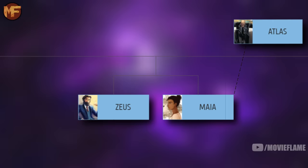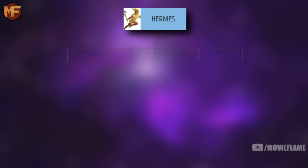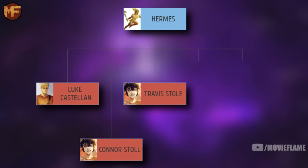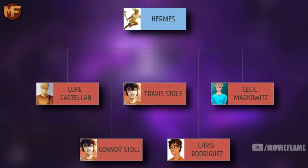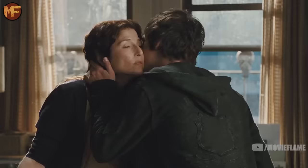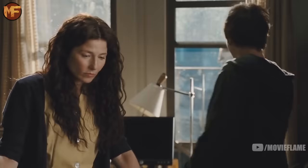Zeus's second affair was with Maia, who was actually the daughter of Atlas — whom we went over earlier. Zeus and Maia had their son Hermes, the messenger god. Hermes connects us to quite a few demigods, including Luke Castellan, my favorite character in the series; Connor and Travis Stoll, the twins who were co-counselors for the Hermes cabin after Luke's departure; Chris Rodriguez, who went on to date Clarisse; and Cecil Markowitz, a smaller character who resided in the Hermes cabin.